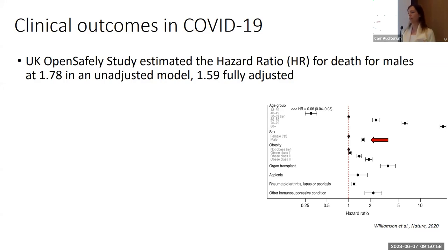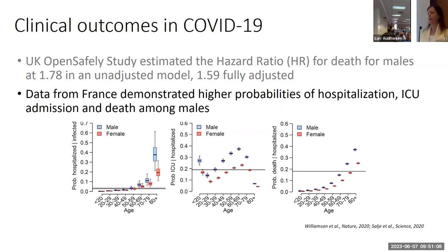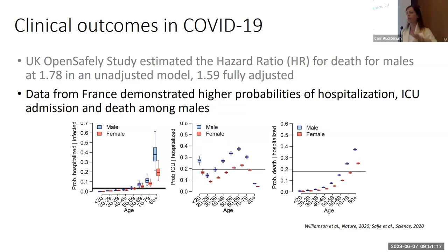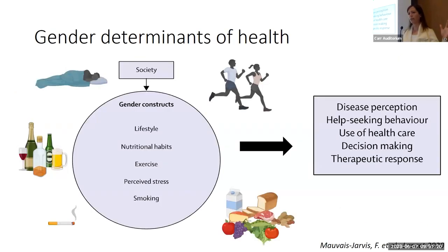Looking at the updated Global Health 50/50 data, which they stopped collecting in October 2022: for every 10 female tests, there are 8 male tests done; for every 10 female cases, there are 10 male cases; for every 10 female hospitalizations, there are 12 male hospitalizations; for every 10 female ICU admissions, there are 17 male ICU admissions; and for every 10 female deaths, there are 13 male deaths. This consistently shows higher risk of severity in males across approximately 120 countries, with some improvement in outcomes over time likely due to treatment interventions. When numbers are this consistent across multiple contexts, you must argue there's both a gender and a sex effect.